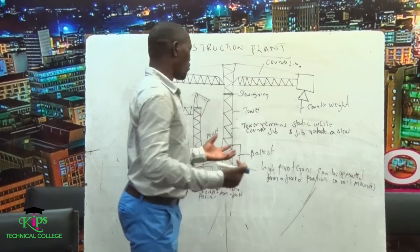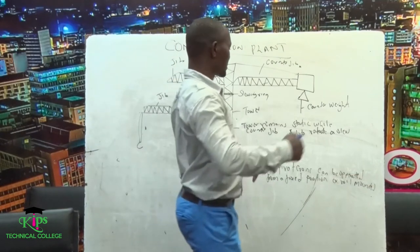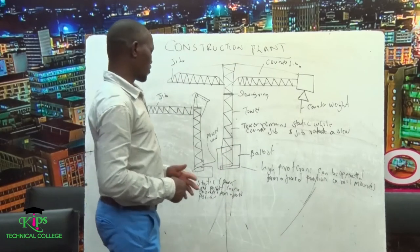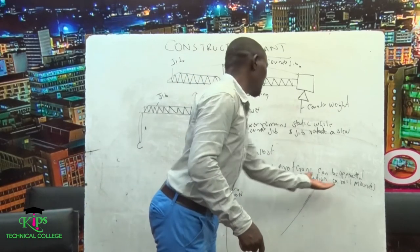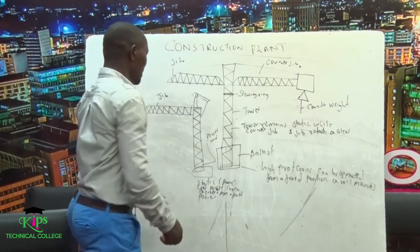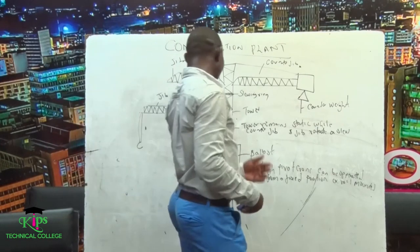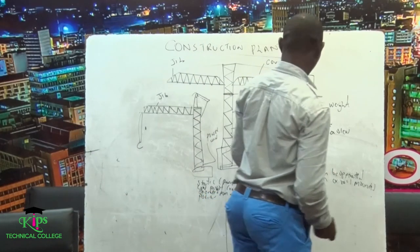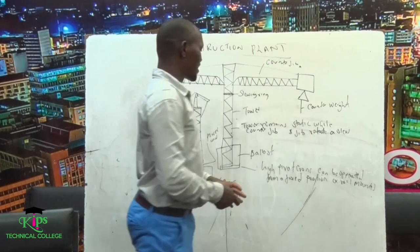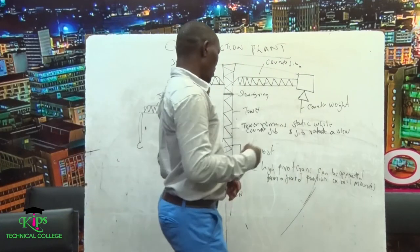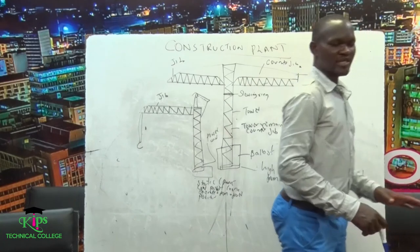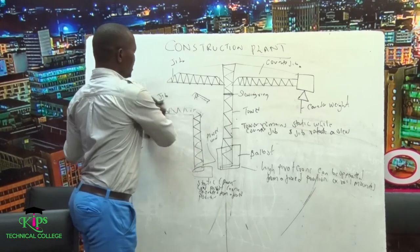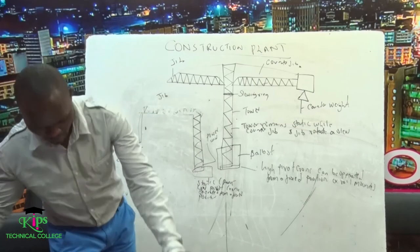The working principles of these machines: static cranes have a lower pivot that operates from downwards to upwards. High-pivot cranes can be operated from a fixed position or from a rail-mounted configuration. Let's look at another type of crane — the lorry-mounted crane or the mobile crane.